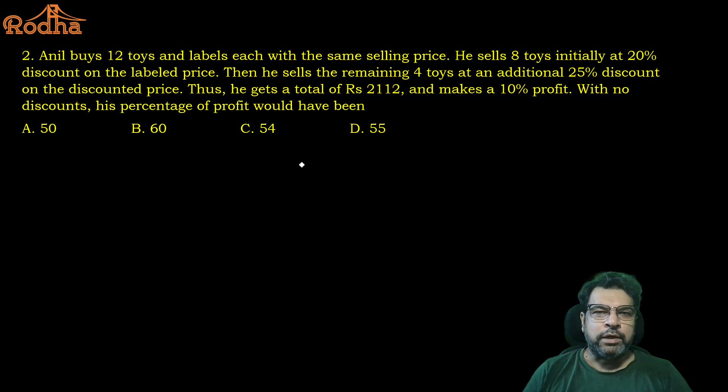Moving on to second. Anil buys 12 toys and labels each with the same selling price. In a way mark price, labeled, whatever is labeled, that is marked. He sells 8 toys initially at 20% discount on the label price, and then he sells the remaining 4 toys at an additional 25% discount on the discounted price. Thus he gets total of this much rupees, making 10% profit. With no discount, his profit percent would have been. I think 2020 or 21 question, CAT.